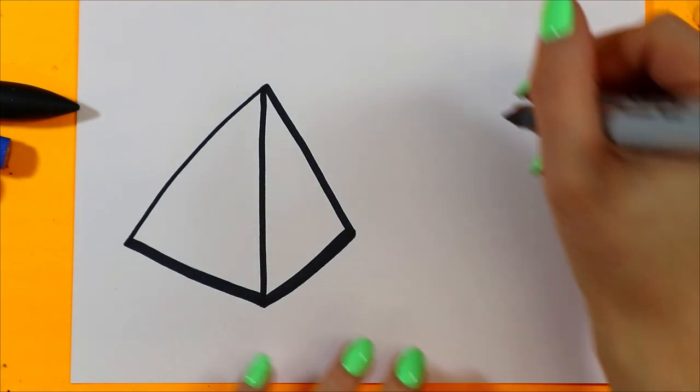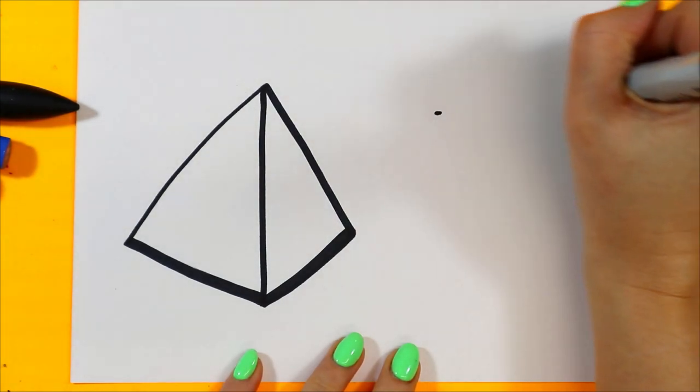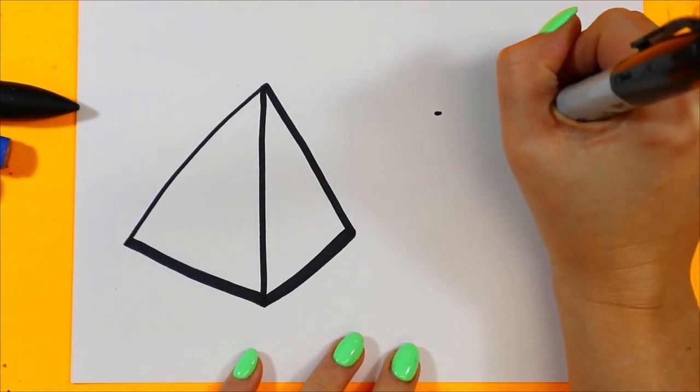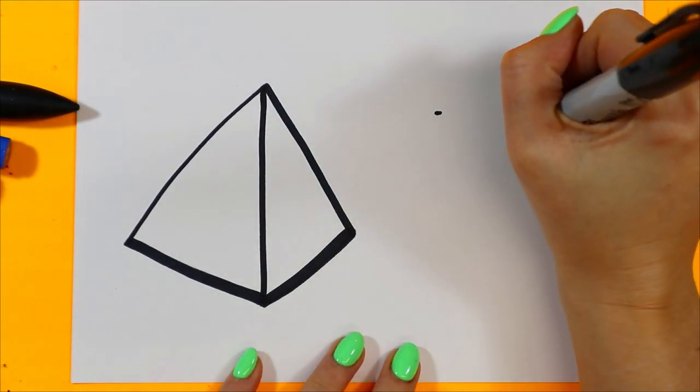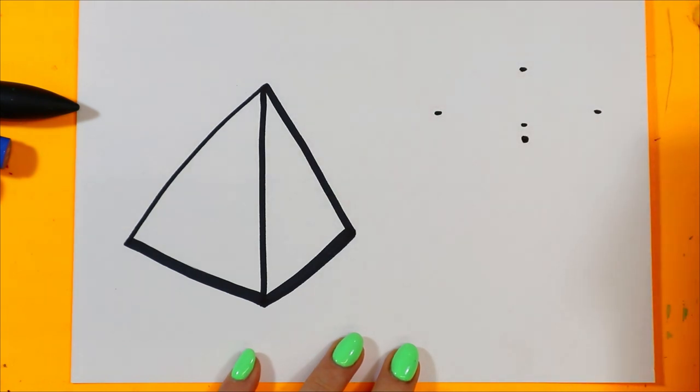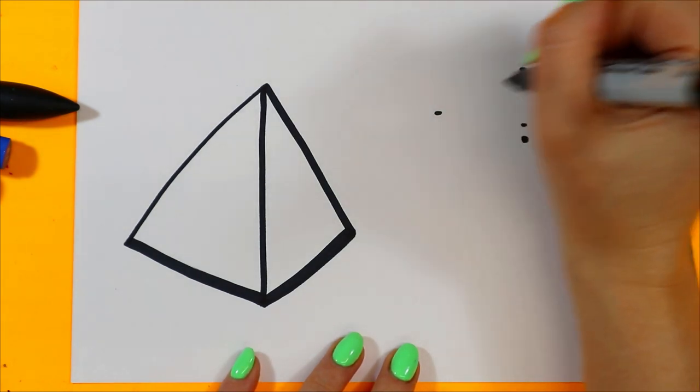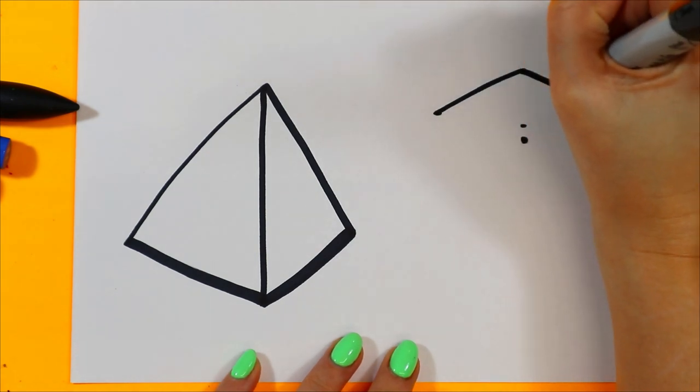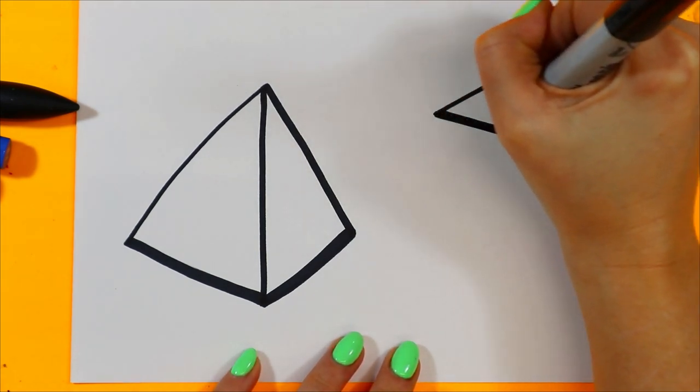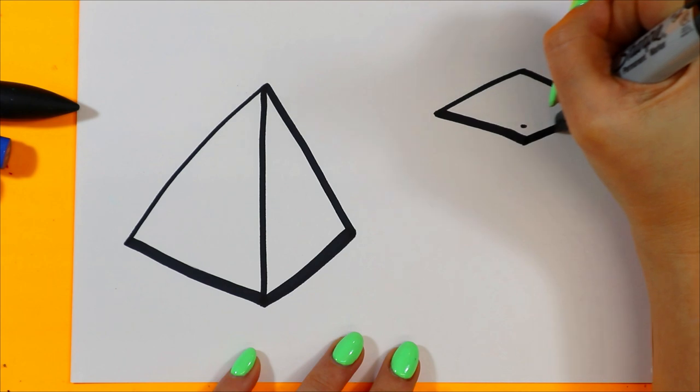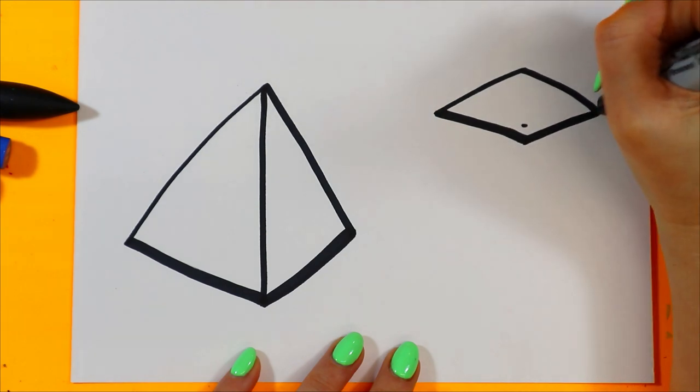Next, we're going to do a rectangular prism. So we're going to draw one, two, three, four dots. Oops, that one should be lower. To make a diamond. And then we're going to connect the dots to make that diamond.